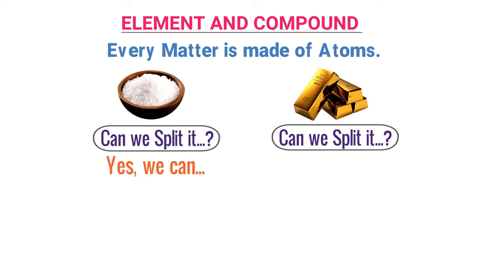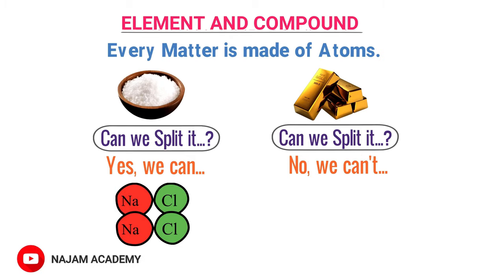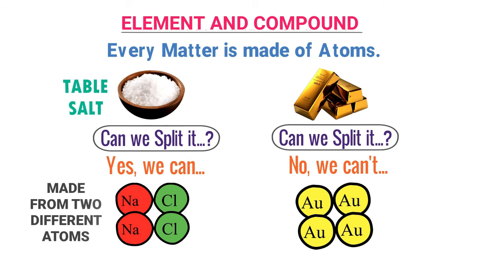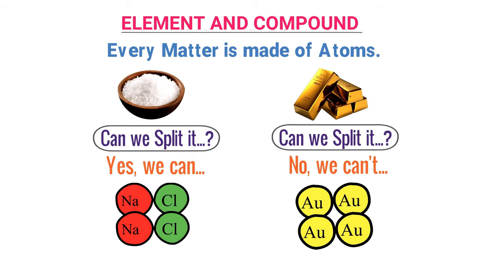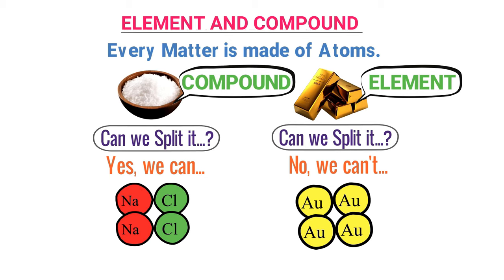The answer for table salt is yes — we can split it into two atoms: sodium and chlorine. While for gold, the answer is no. We cannot split gold into two or more atoms, because gold is made from only one type of atom. Thus, table salt is made from two different atoms — sodium and chlorine — while gold is made from only one type of atom. In chemistry, we call gold an element because it is made from only one type of atom, while we call table salt a compound because it is made from two different types of atoms.